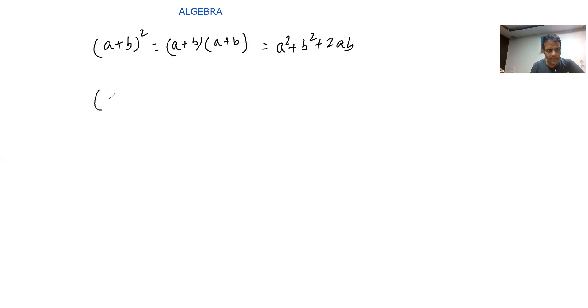Second formula is (a-b)². This is (a-b) into (a-b). What is this expansion? a² + b² - 2ab.